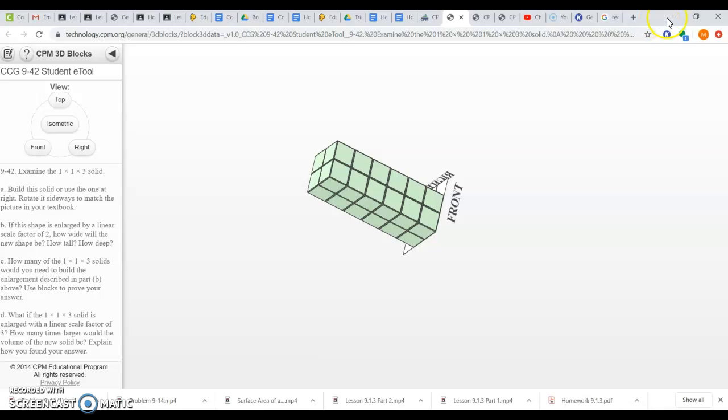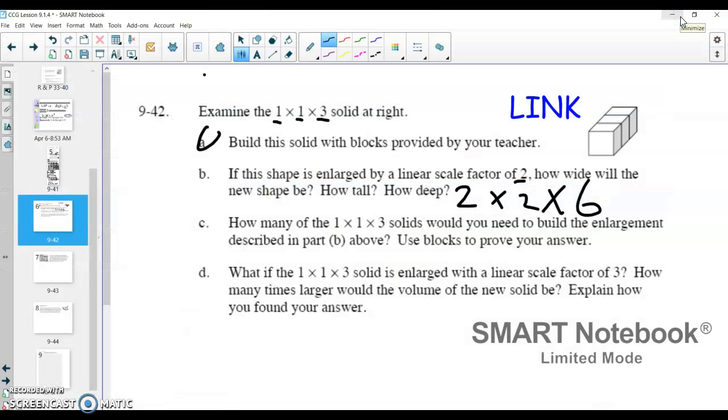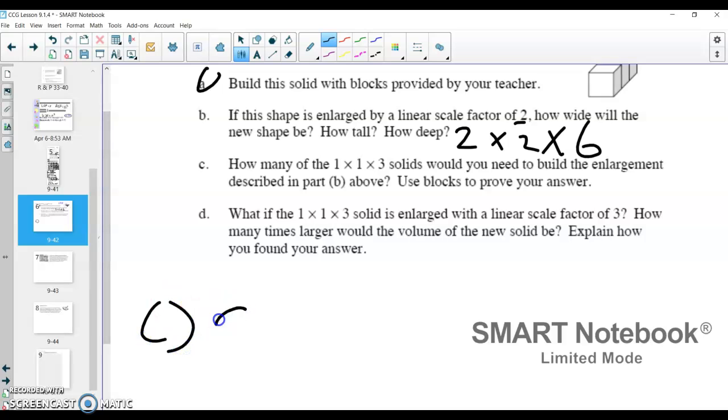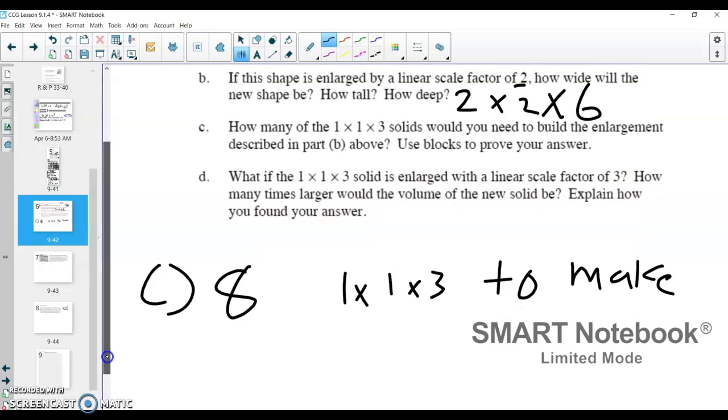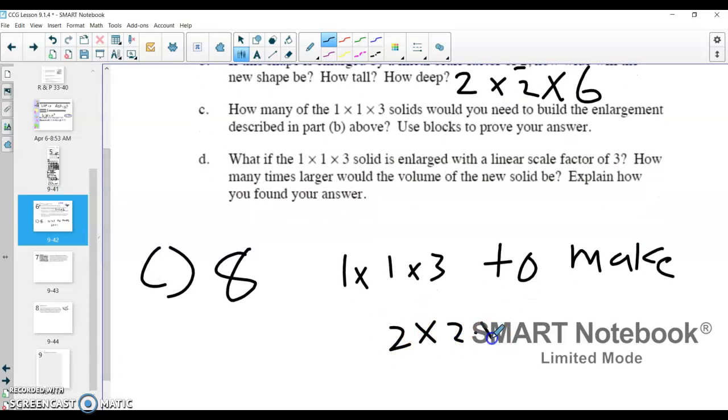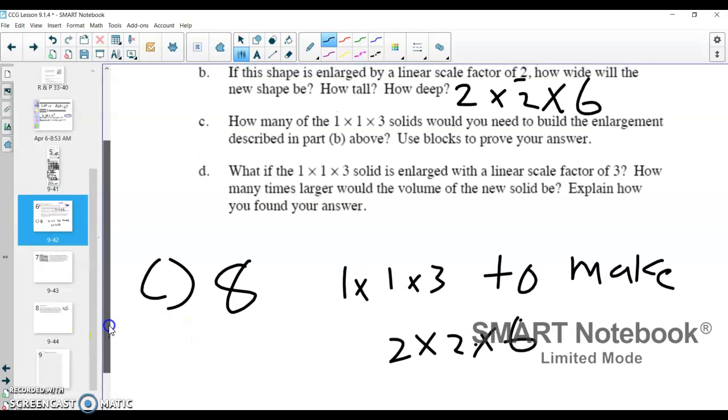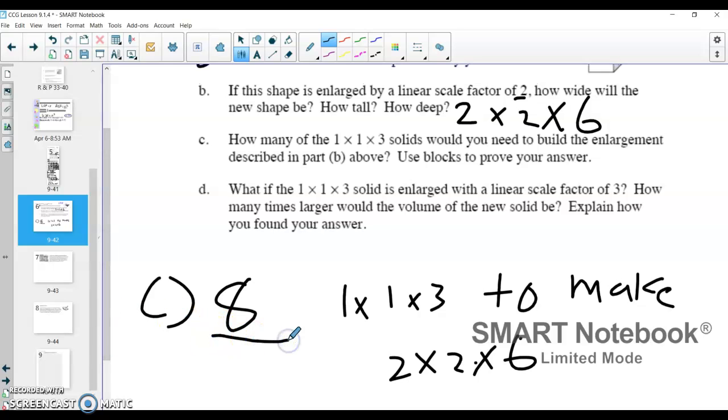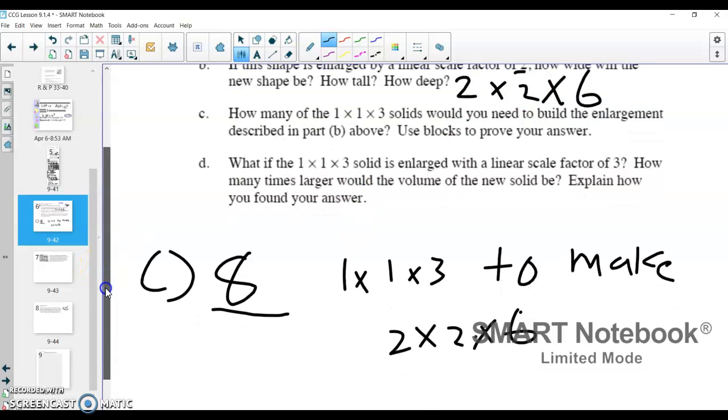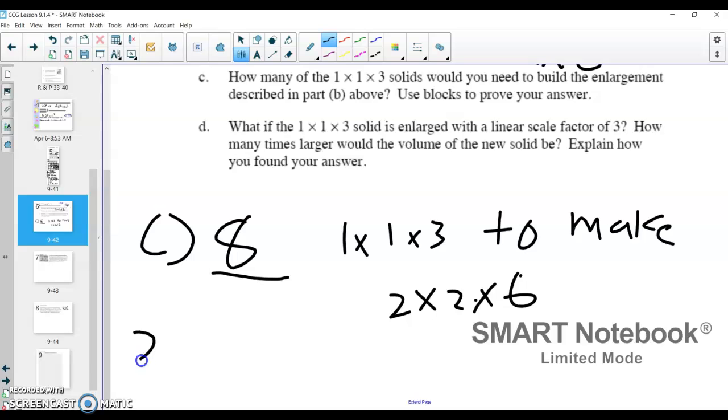It takes 8 1x1x3, takes 8, and I'm going to write that down here. Takes 8 1x1x3 solids to make a 2x2x6 shape. All right, and that's reinforcing this idea that the volume is 8 times bigger when you have a linear scale factor of 2. What that showed us from the last time would be like, well, 2 cubed equals 8, and so that's why our volume scale factor is 8, or it's 8 times bigger.